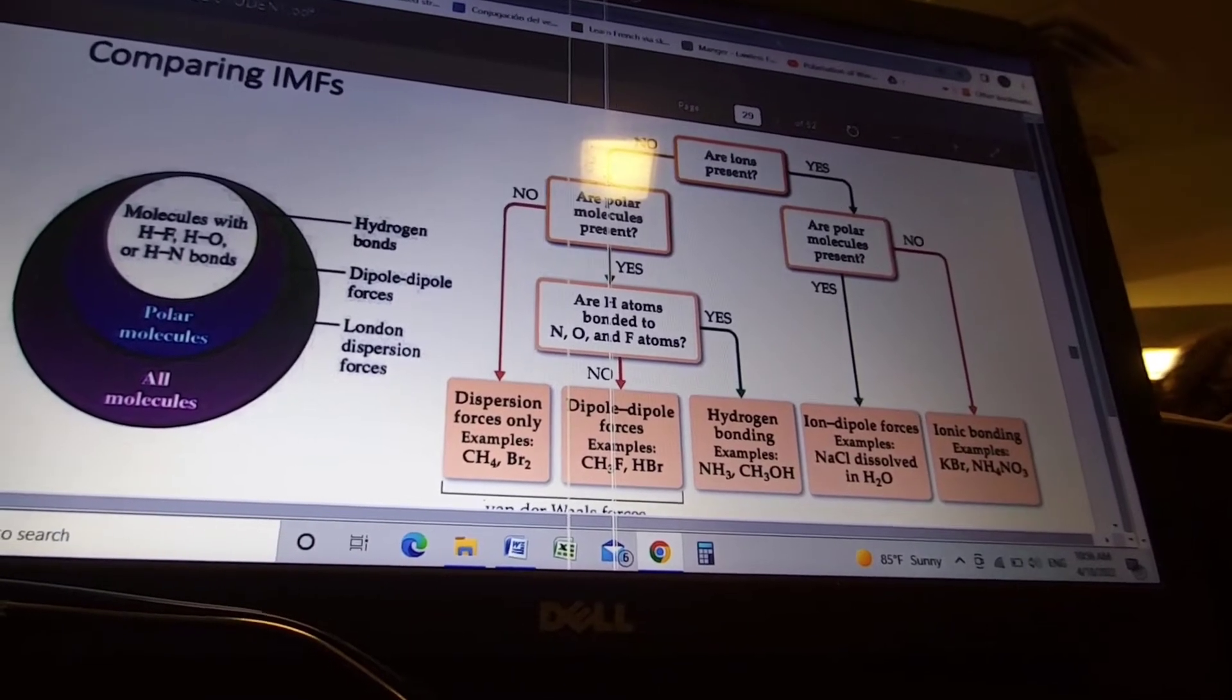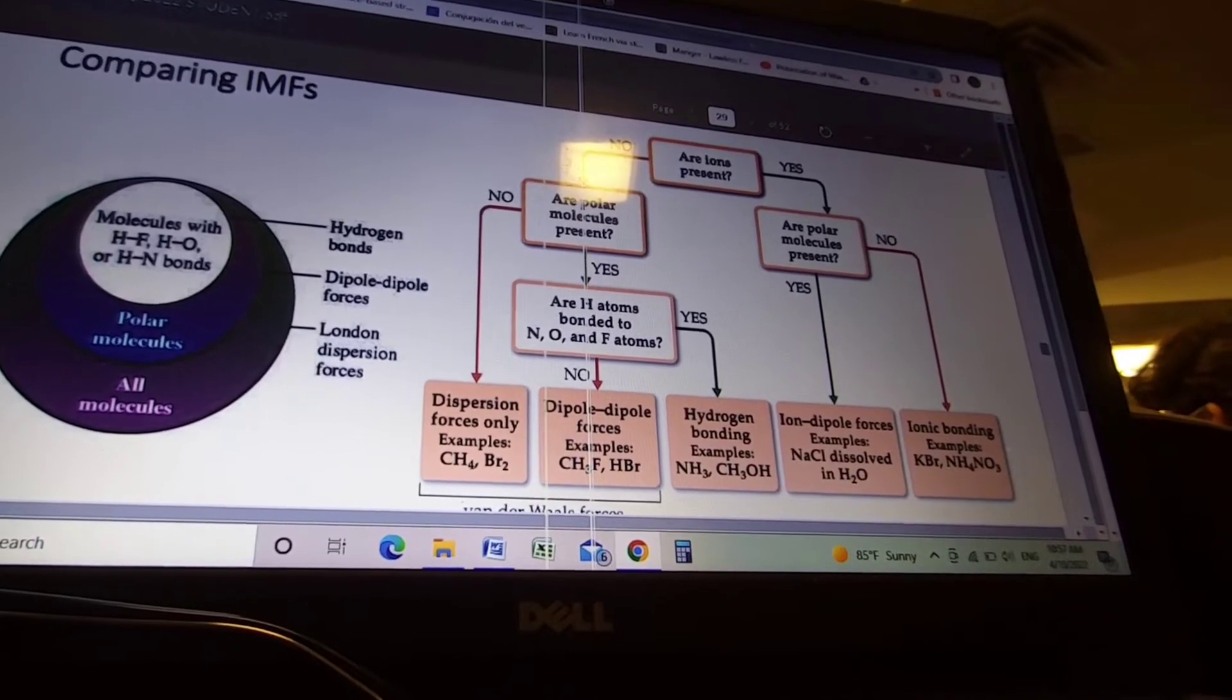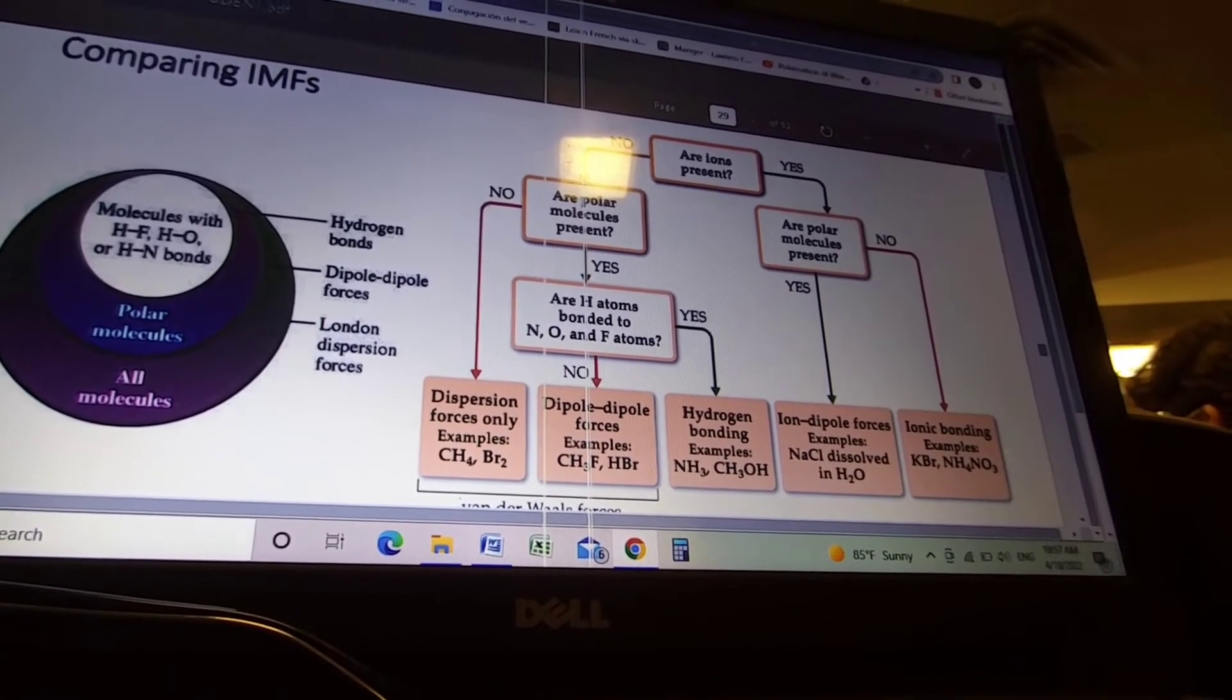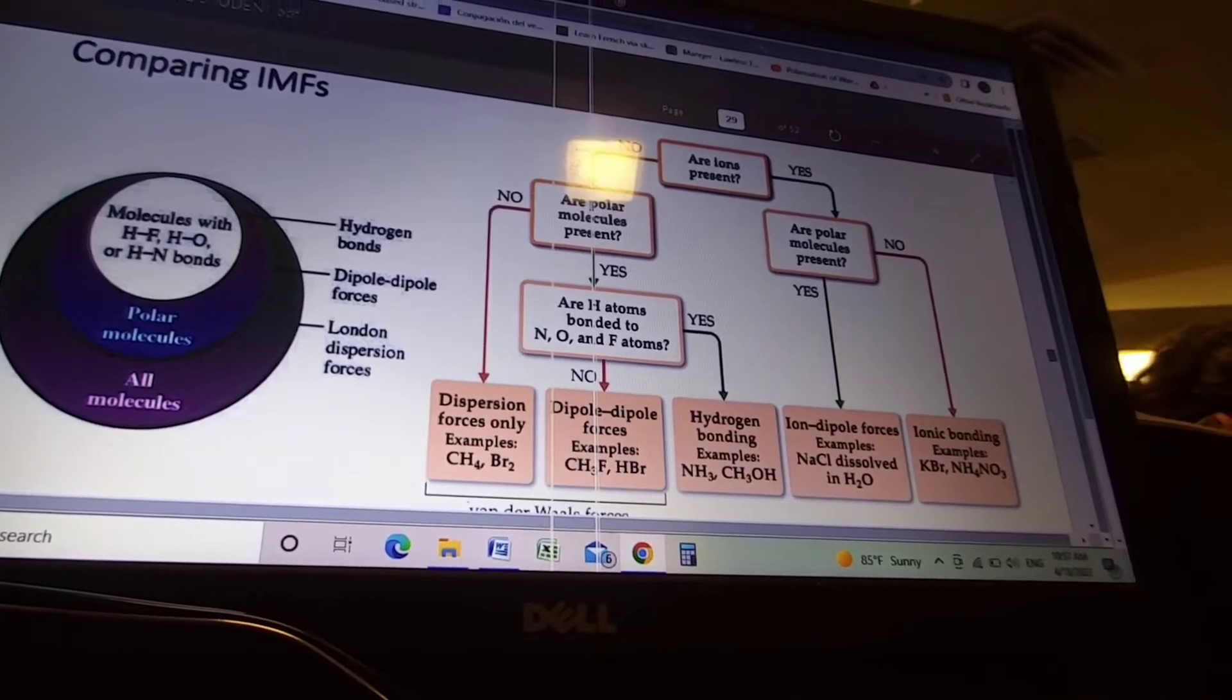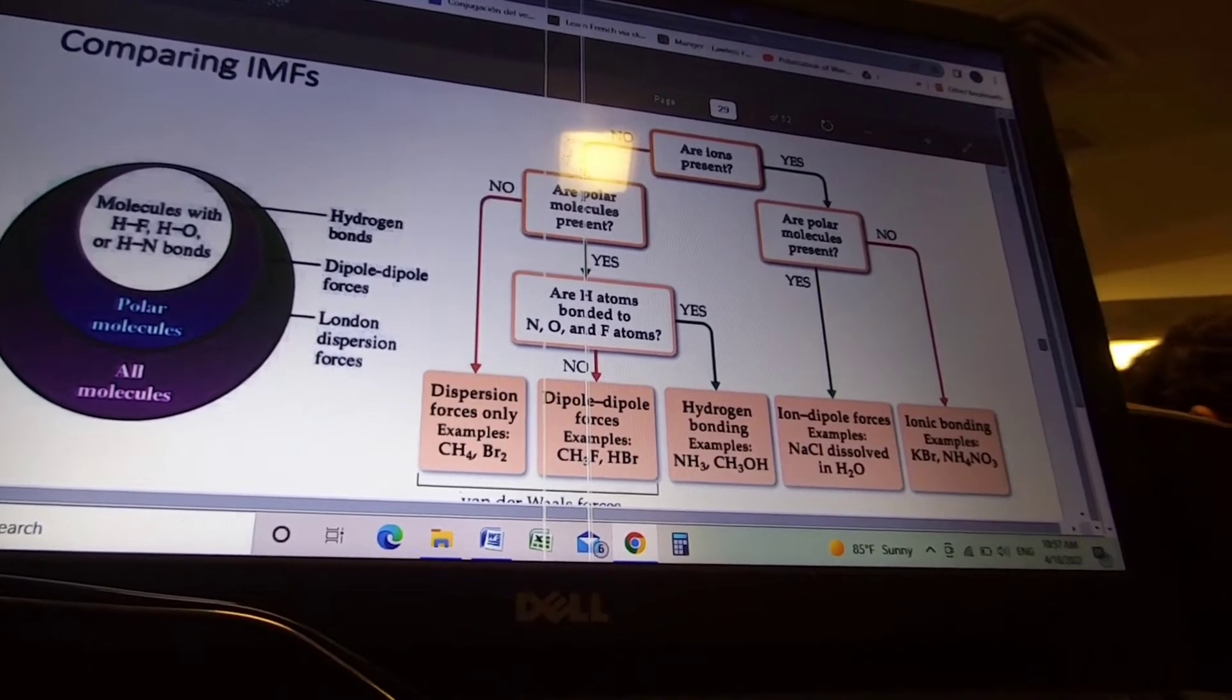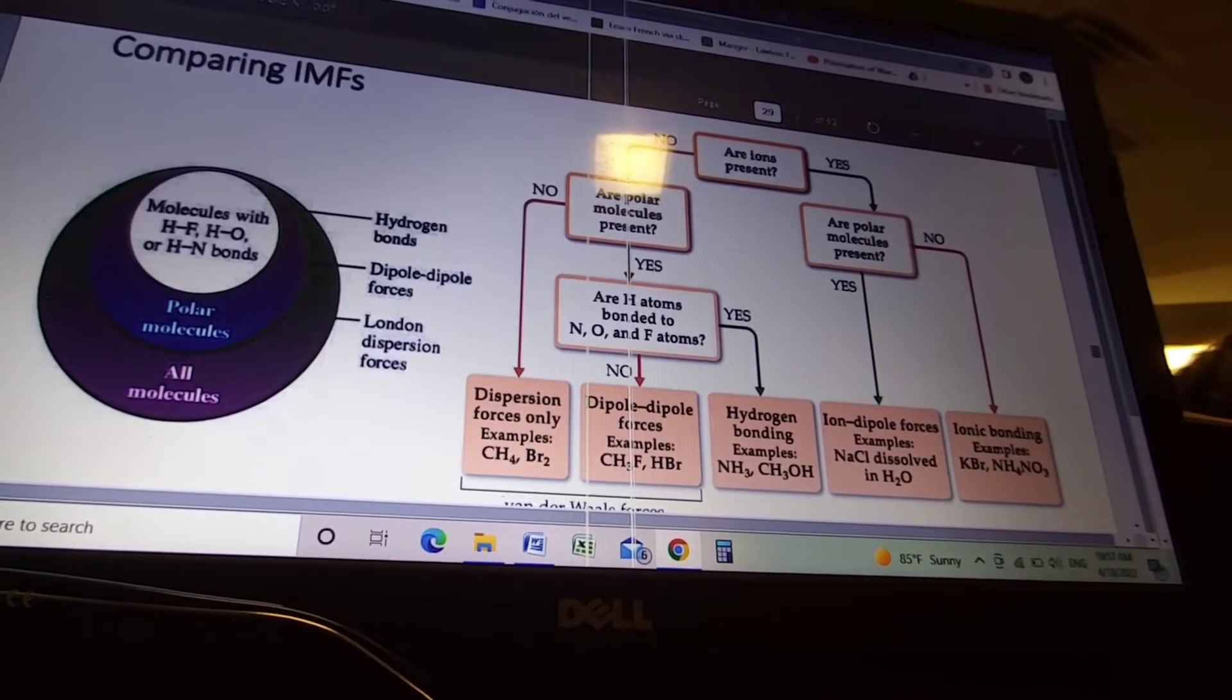If we don't have any ions present but we do have polar molecules and we have H's bound to N, O's, or F, we have hydrogen bonding, typically stronger than dispersion and dipole-dipole interactions. If we do have polar molecules but none of them can hydrogen bond, then you just have dipole-dipole interactions.